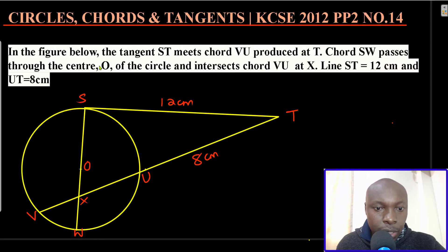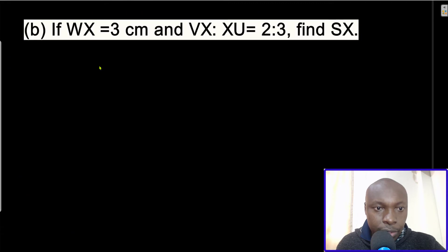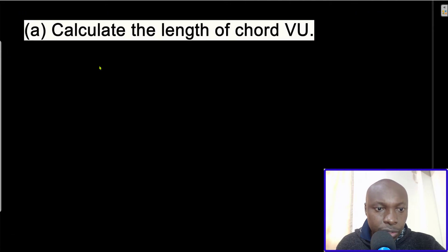The first question is: calculate the length of chord VU. The second question is: if WX equals 3 centimeters and the ratio VX to XU equals 2 to 3, find SX. Let us go straight to the first question — calculate the length of chord VU.